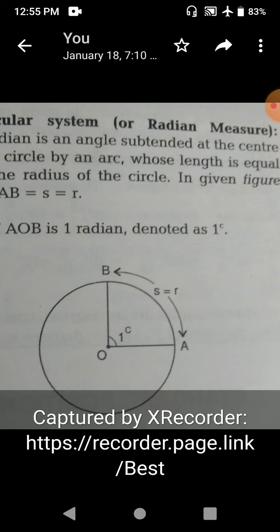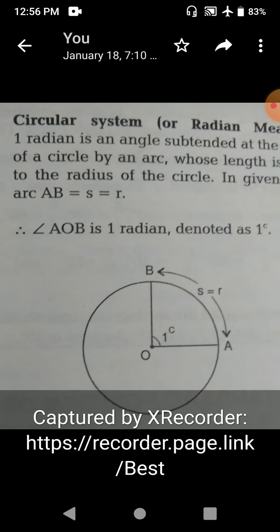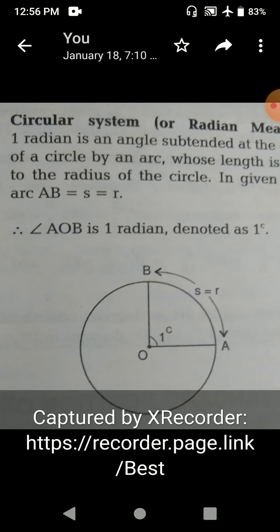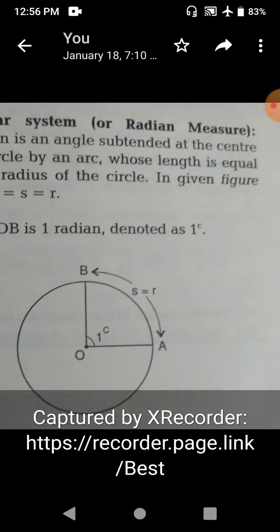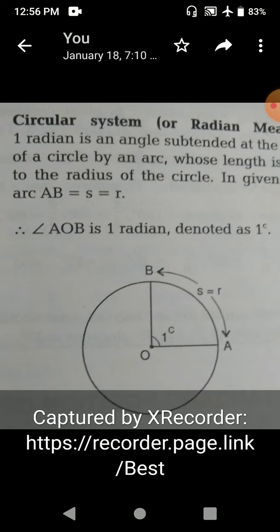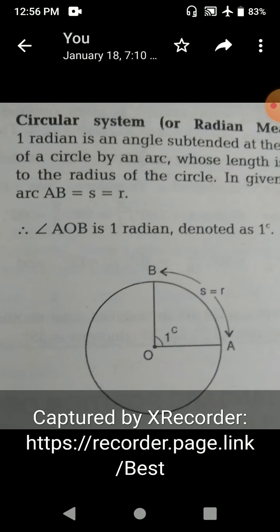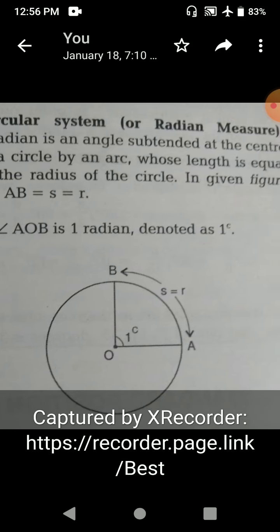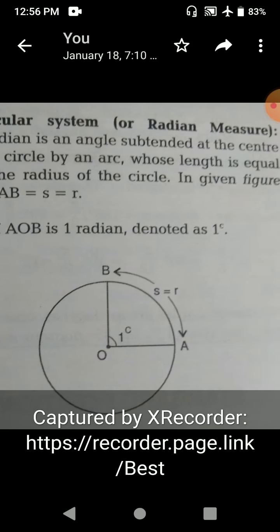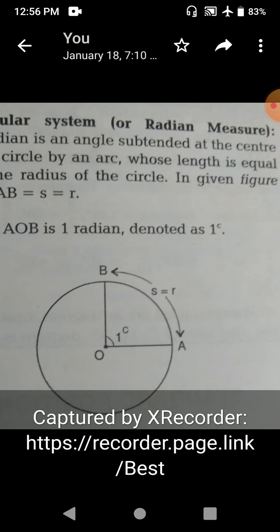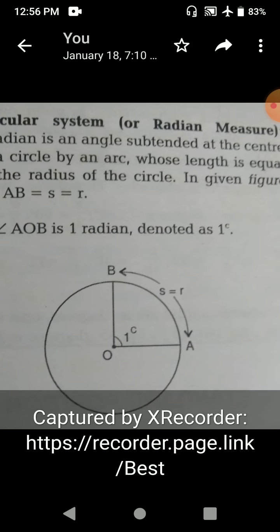So the definition of one radian - definition is important. One radian is an angle subtended at the center of a circle by an arc whose length is equal to the radius of the circle.